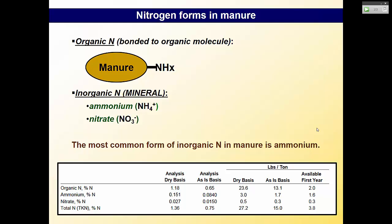To review: organic N is amino acids bonded in organic structures; the inorganic forms are ammonium and nitrate. You might be given a manure test showing organic nitrogen, ammonium, nitrate, and total nitrogen. If you want to figure out how much is organic and all they gave you is total N and nitrate, subtract nitrate from total N — the rest is organic. They might give you total N and ask how much is mineral, or total N and ask how much is organic. Understand these differences.